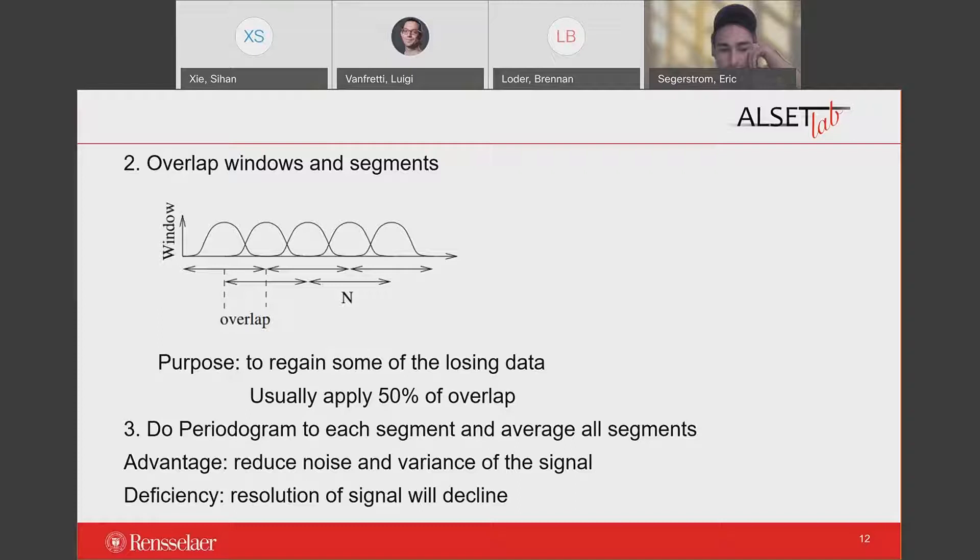The last step is to do periodogram to each segment and average these periodograms. By doing so, the curve of PSD will look smoother and the variance of the estimated PSD will be reduced. But it also has deficiency in which the resolution of power spectral density will decrease in exchange for decreasing variance and noise.